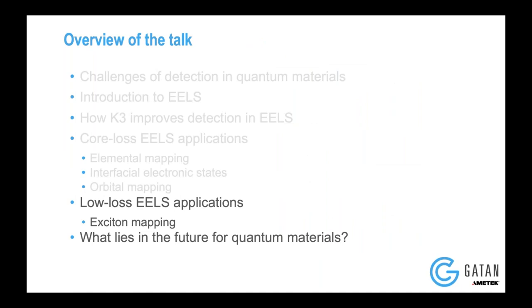So you saw three kinds of examples in core loss EELS. We started with a very elemental example of elemental mapping, and saw how K3 accelerated the process by decreasing the dwell time. We could do atomic scale EELS mapping with a very small dwell time. Then we went to differential chemical mapping where we could see the cobalt or iron being concentrated at different points, dramatically changing the magnetic properties. Then we saw a spin-to-charge conversion device and how different electronic states form at the interface. Finally, we took a look at a very complicated crystal field splitting at the atomic scale, and because we had such a nice spectrometer and monochromator, we could resolve what was going on at that length scale.